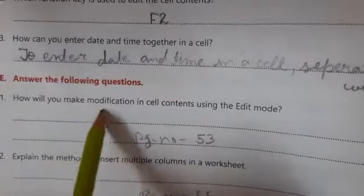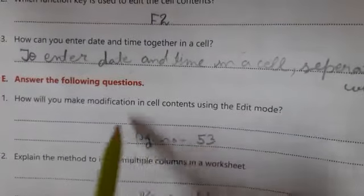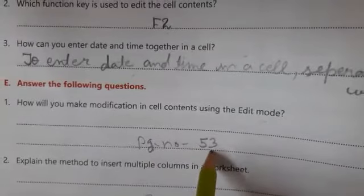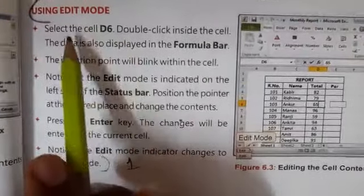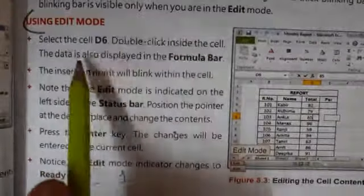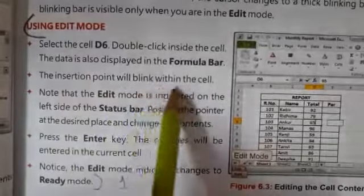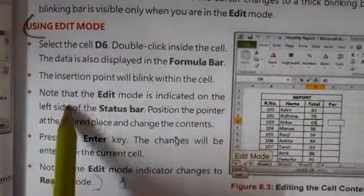Now next question and answers. Number one: How will you make modification in cell contents using the edit mode? For this, open page number 53. Okay, you have to write all the points. First, select the cell D6. Double click inside the cell. The data is also displayed in formula bar. Insertion point will blink within the cell.